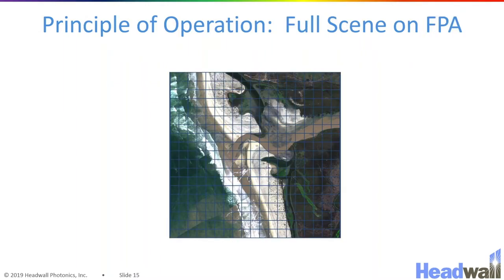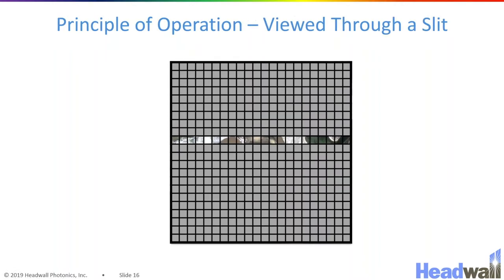The most familiar way of thinking about this is to take a single two-dimensional snapshot where the full scene is divided into the number of spatial pixels on your focal plane array, and then this scene is re-projected onto your camera. It saves it as a digital image where you have a different intensity value for each pixel in the scene.